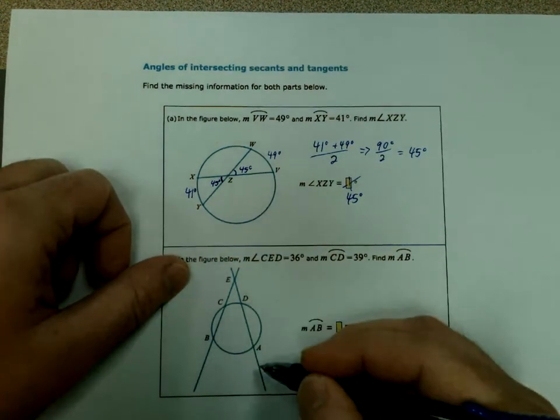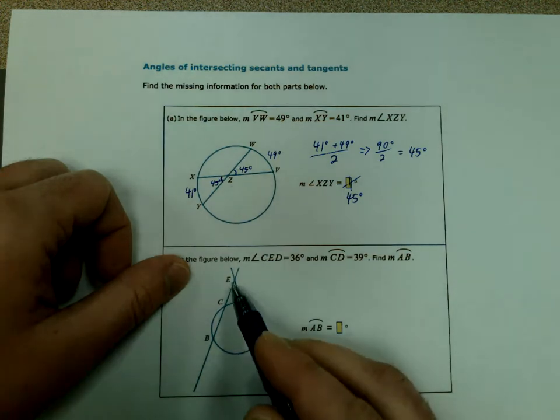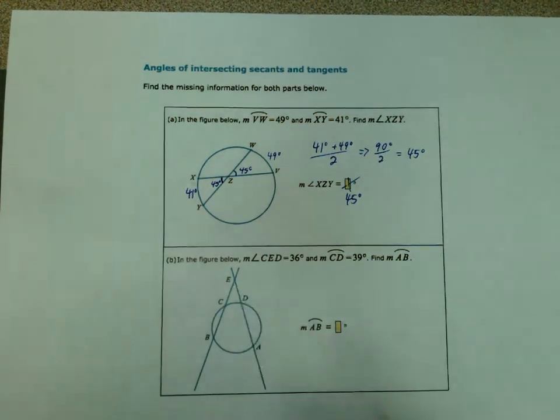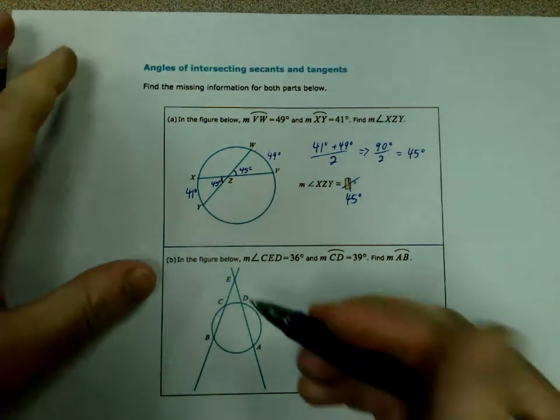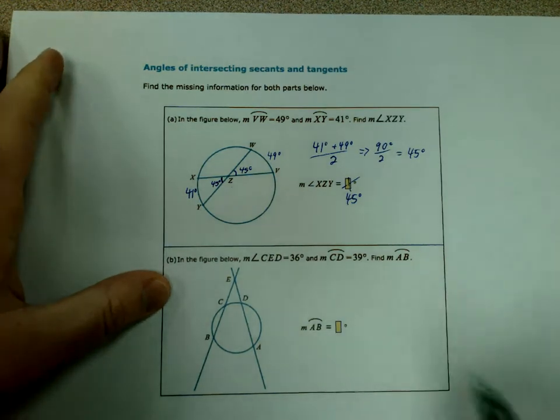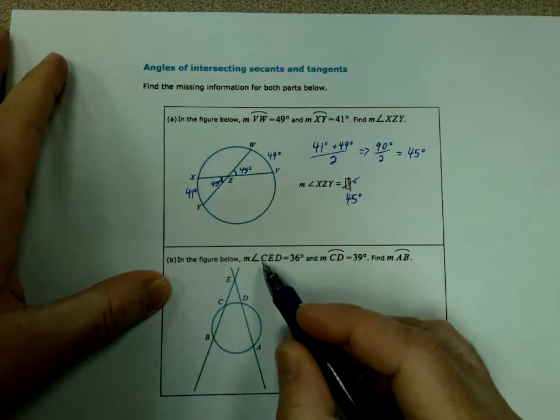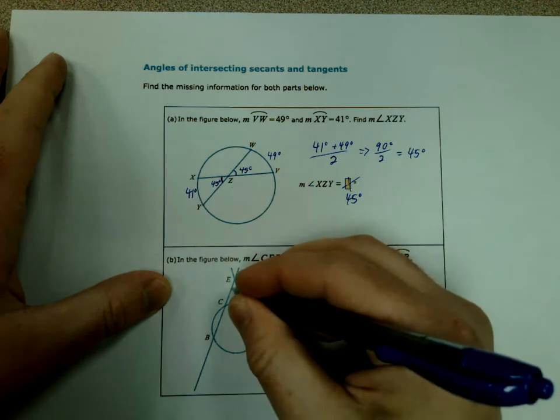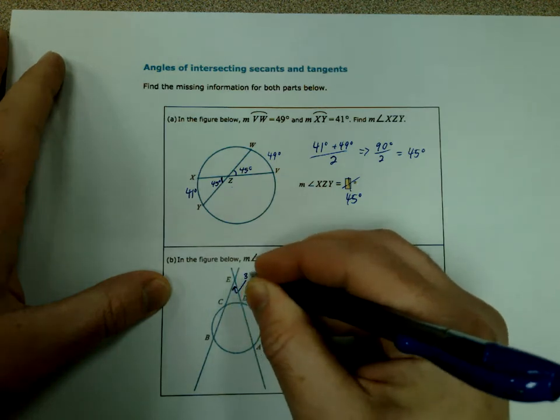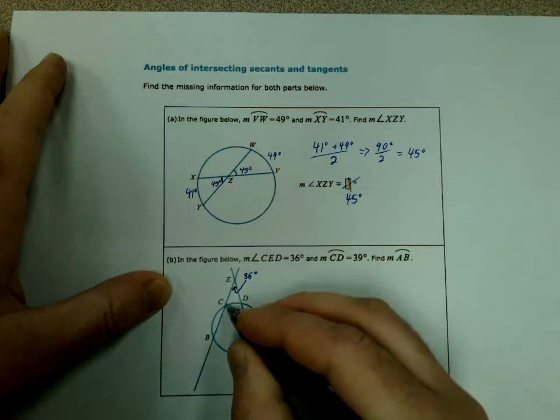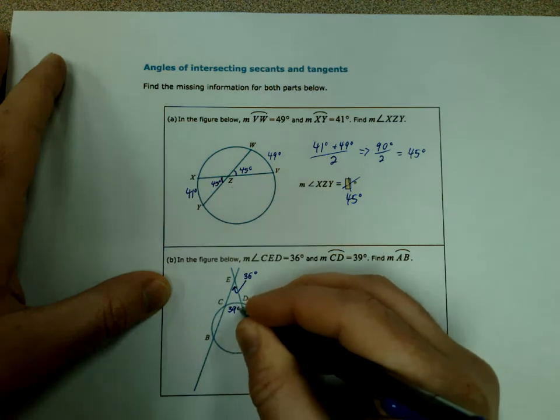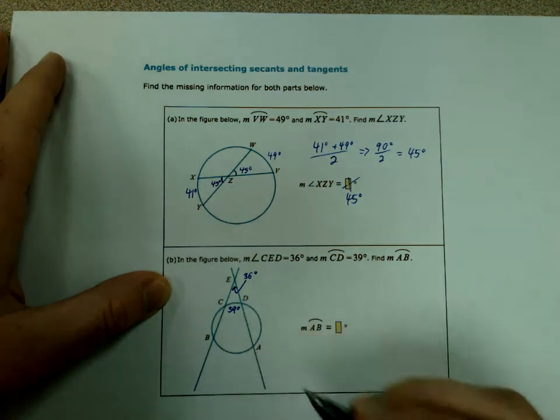Now this one, we have two secants here, and the intersection point for this one is outside of our circle. So I'm going to do something very similar, but with a small change. So we know in this case, this angle is actually given to us now, it's 36 degrees, and CD is 39 degrees. And we're trying to find the arc outside now.